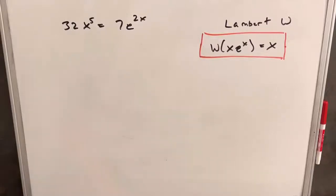Hey, we've got this interesting exponential problem on the board. We have 32x to the 5th equals 7e to the 2x. And we're going to try to solve this with the Lambert W function.